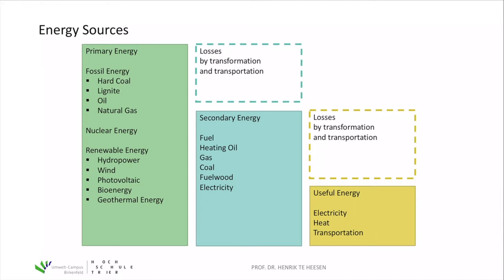There are three different energy sources we differentiate: primary energy marked in green, secondary energy in blue, and useful energy on the right in yellow. Useful energy is the energy we use in everyday life — mainly electricity, heat demand (including room heating, hot water, and industrial process heat to produce steel, for example), and energy for the transportation sector, meaning fuel for cars, planes, and ships.